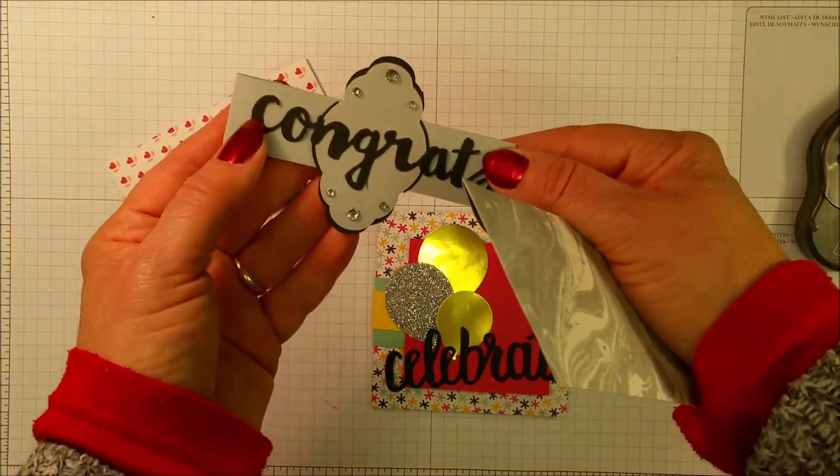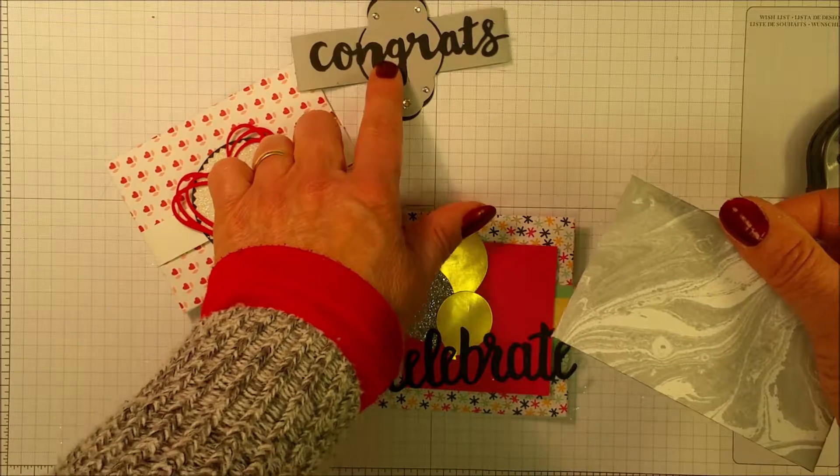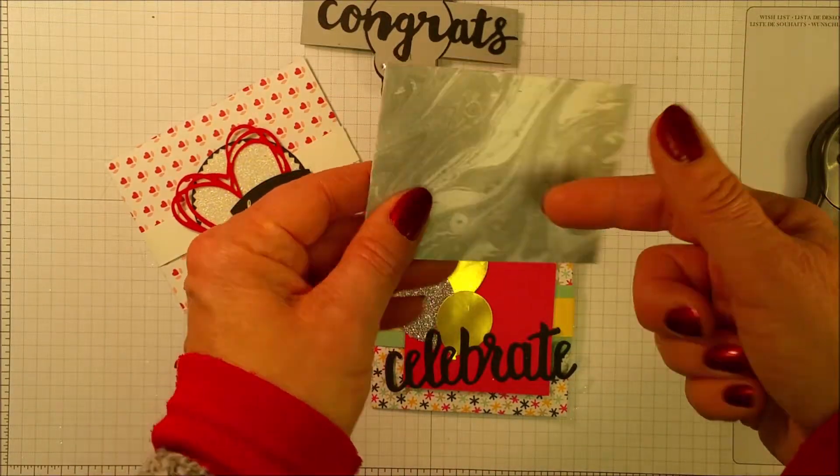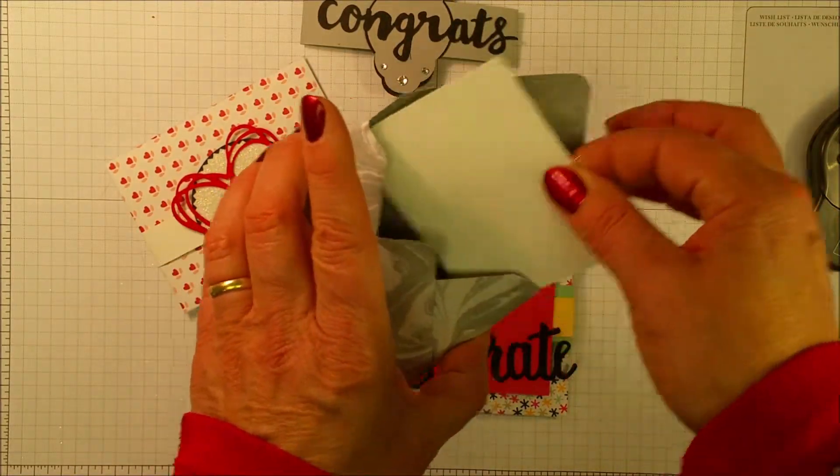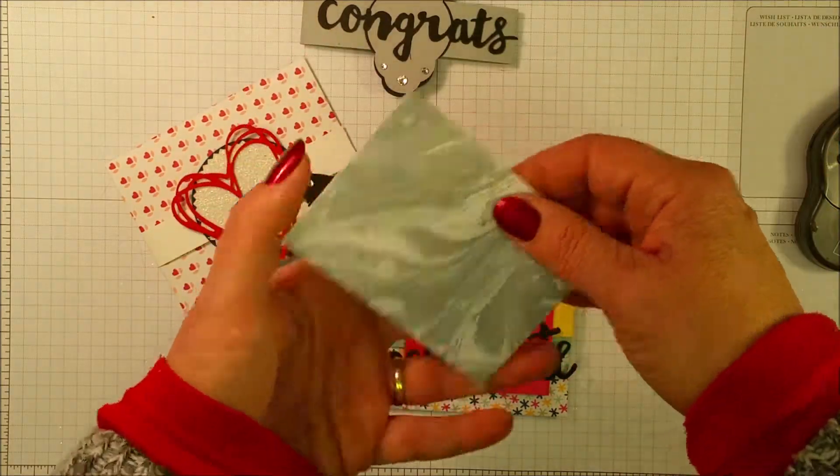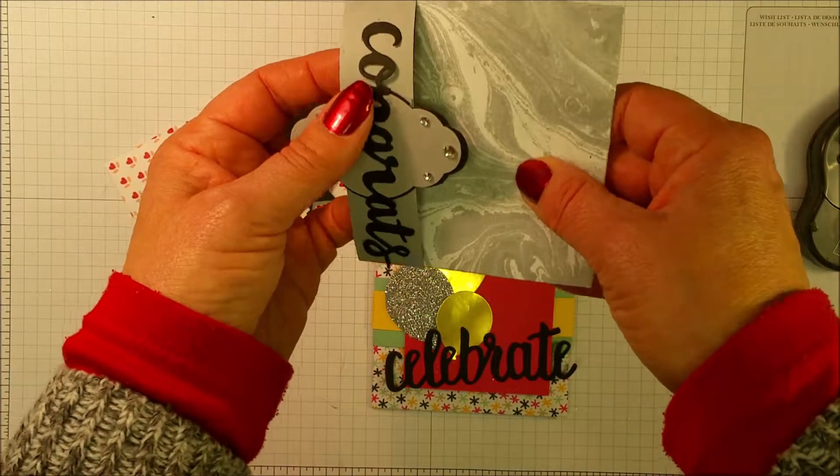They're held together by a belly band. You can decorate the belly band. You can decorate the envelope itself. This one is just made out of designer paper. This one's a little bit smaller than the one I showed you initially. Again, you can make them any size you want.